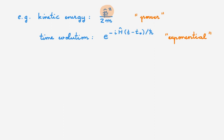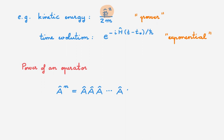The key building block of all our discussion today is the power of an operator. We can easily define the power n of an operator as the application of this operator n times, so that there are n terms. What we'll see in the rest of the video is that we can build more complex functions of operators, such as the exponential function, by simply using this expression for the power of an operator.